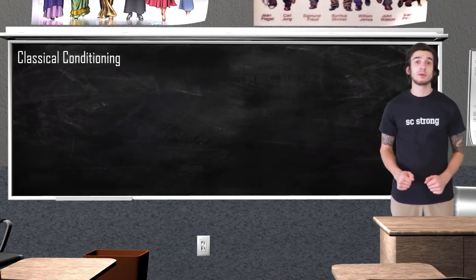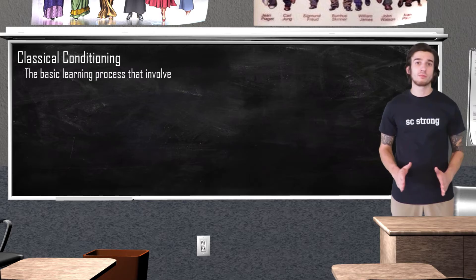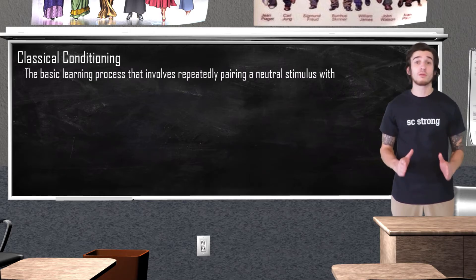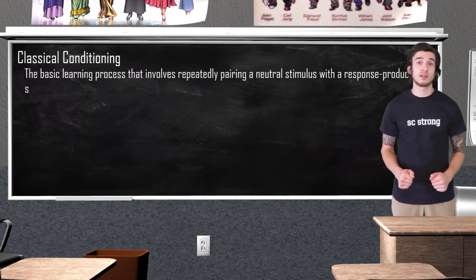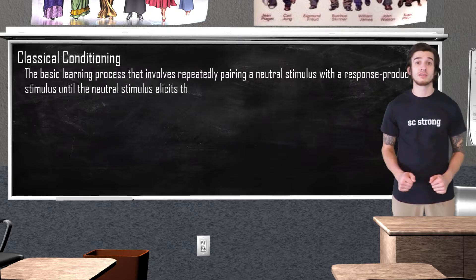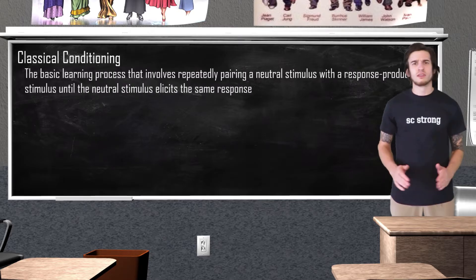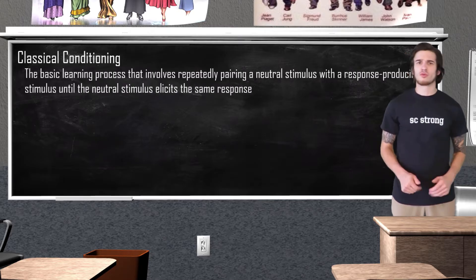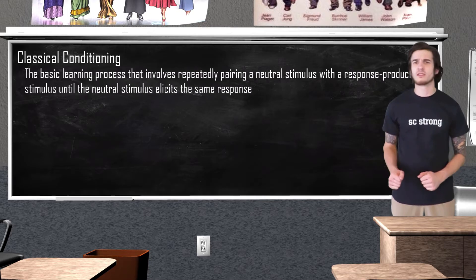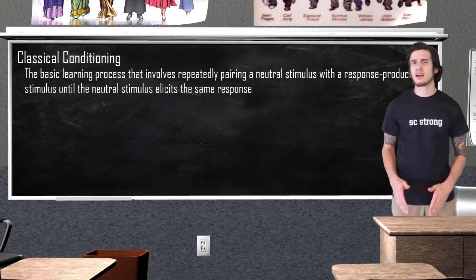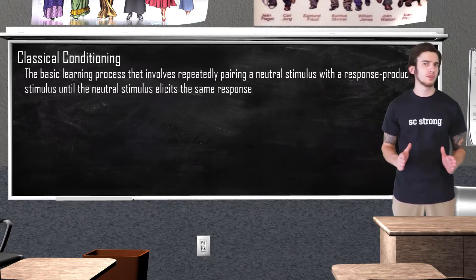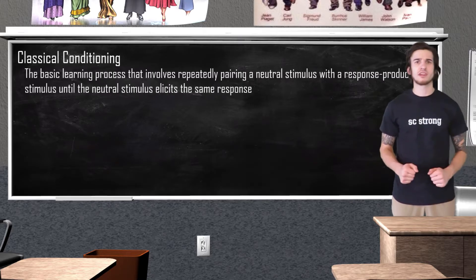Classical conditioning is going to be a basic learning process that involves repeatedly pairing a neutral stimulus with a response-producing stimulus until the neutral stimulus elicits the same response. Elicit just means draw out or bring forth. What this means is that the neutral stimulus does not necessarily produce a new behavior, but instead causes an existing behavior to occur.